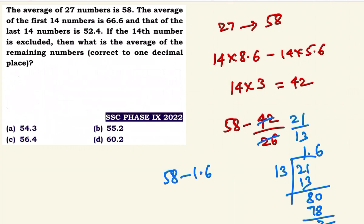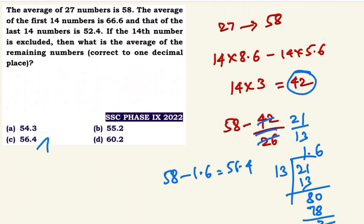58 minus 1.6 is equal to 56.4, approximately 56.4, correct to one decimal place. The first 14 deviation is 8.6, last 14 deviation is 5.6, overall deviation is 42. 14 plus 14 is 28, but one number is repeated, so remaining is 26. The normal average is 58, so we have 58 minus 42 divided by 26 for the remaining 26 numbers.